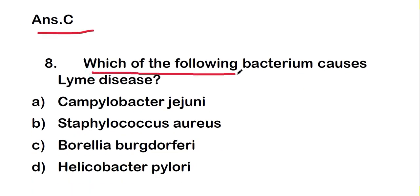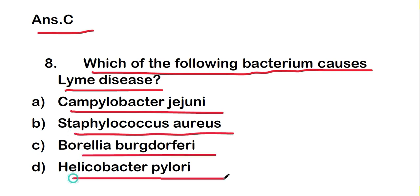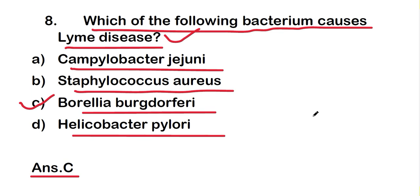The next question is: which of the following bacterium causes Lyme disease? The options are Campylobacter jejuni, Staphylococcus aureus, Borrelia burgdorferi, or Helicobacter pylori. The right answer is option C — Borrelia burgdorferi — which is the bacterium that causes Lyme disease.